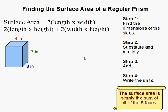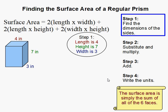How to find the surface area of a regular prism. The first step is to find the dimensions of all of the sides.